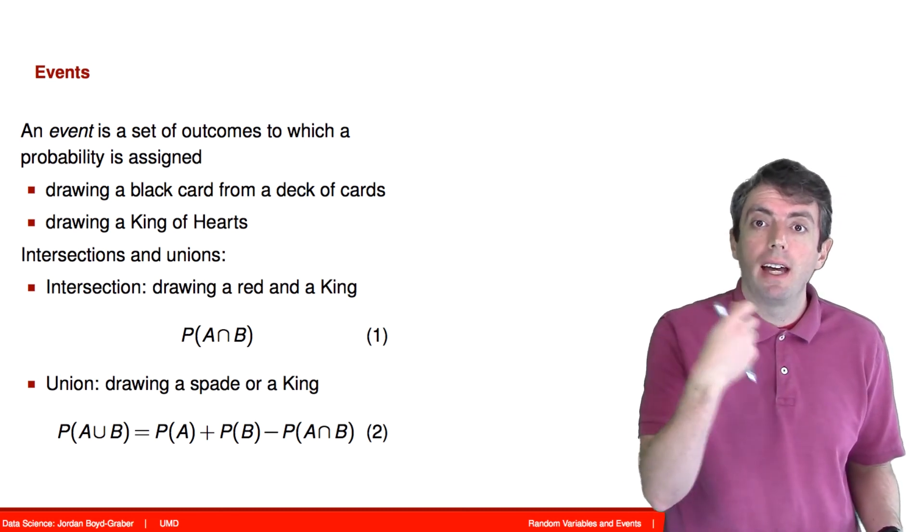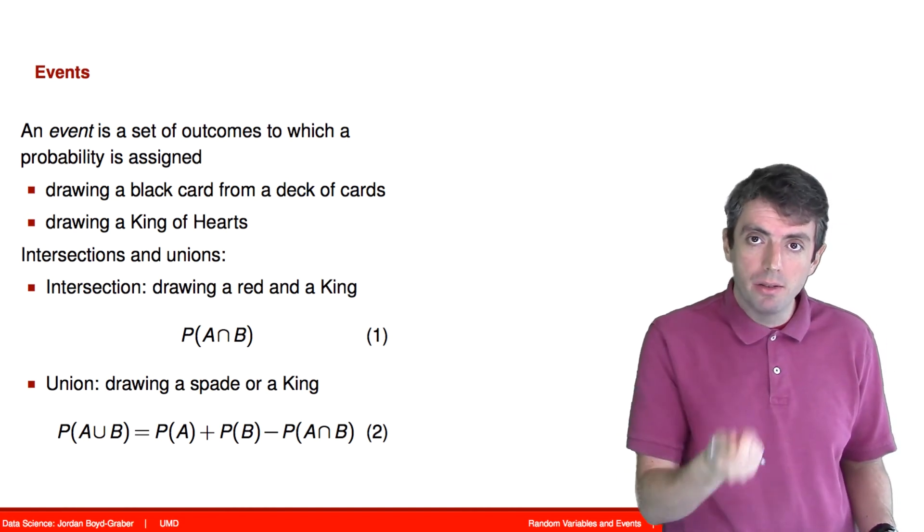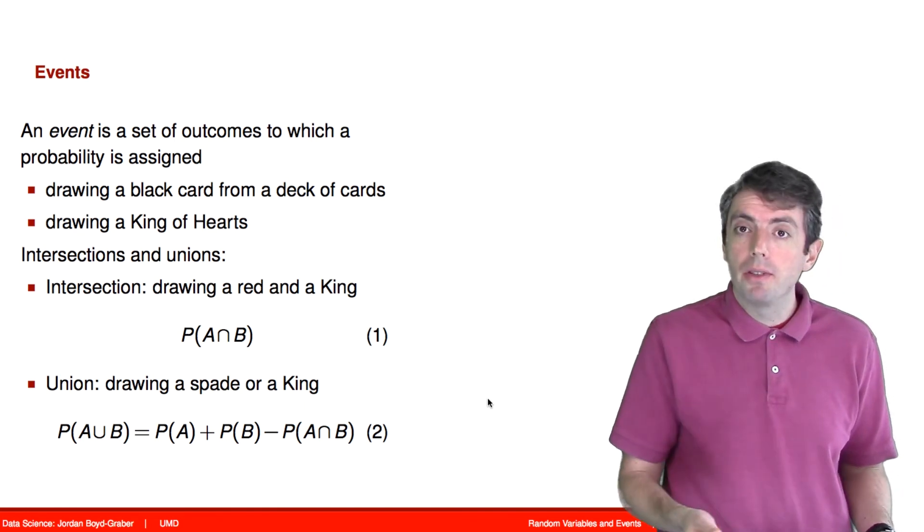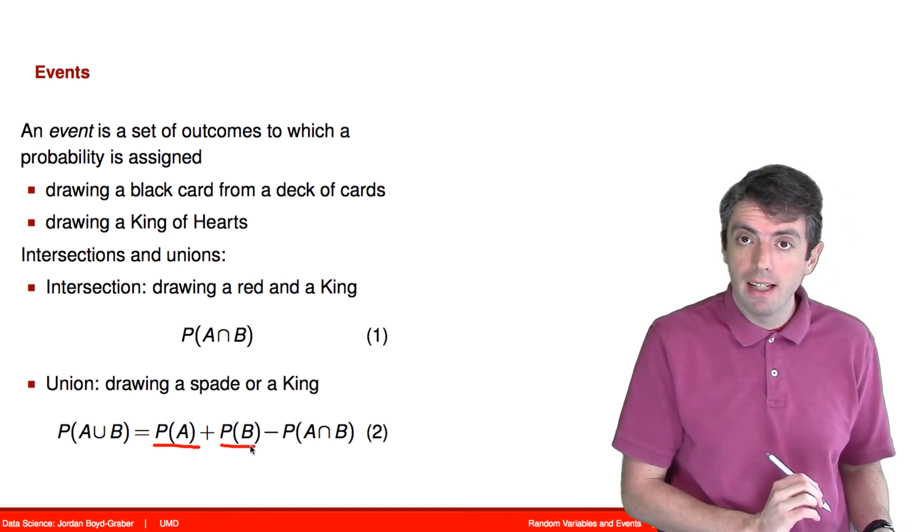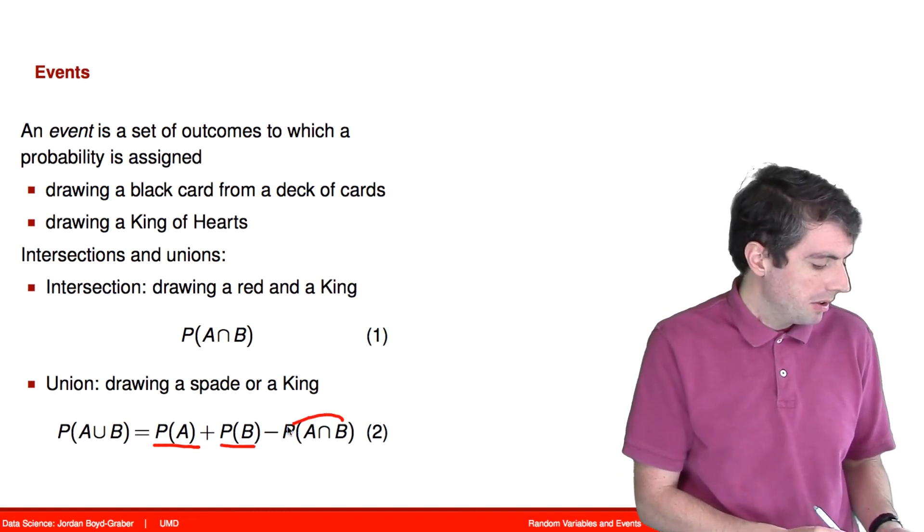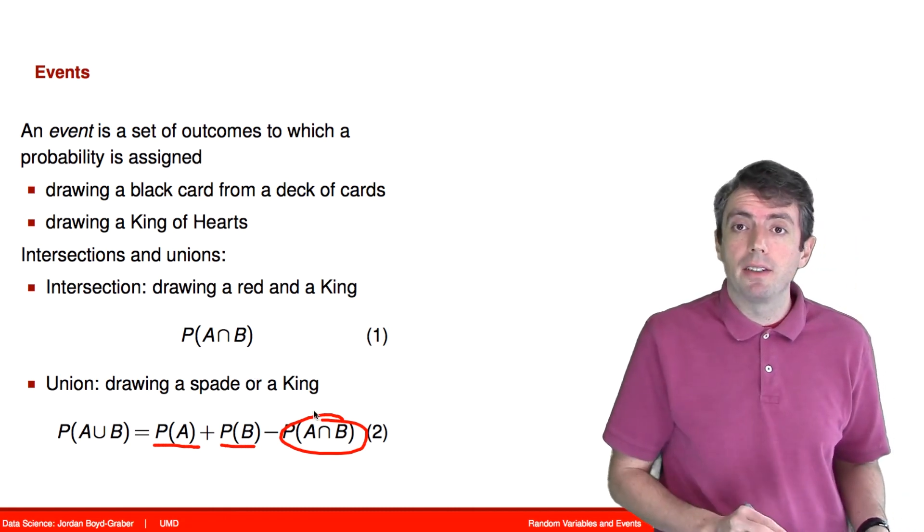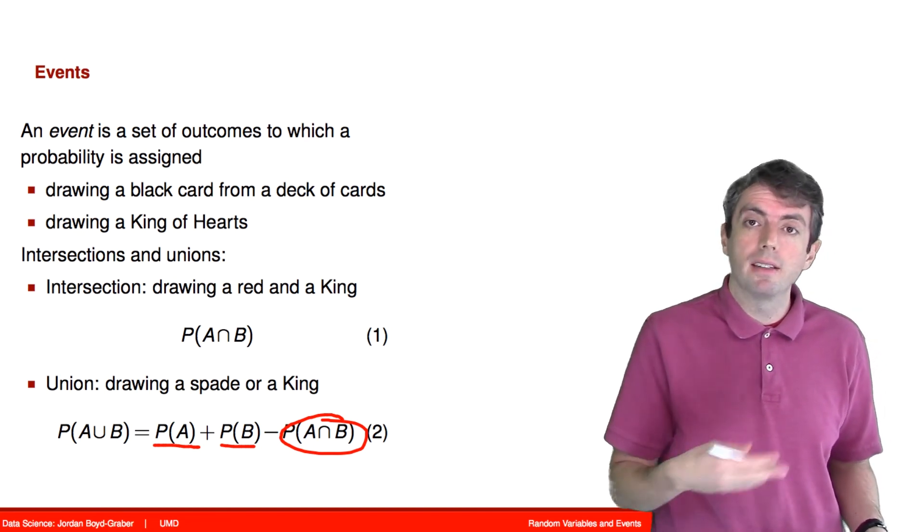And so to compute that union, to compute that probability, we take the probability of drawing a spade, the probability of drawing a king, and we subtract out the intersection. Because if we don't subtract out the intersection, we have double counted because you do have some cards that are both kings and spades.